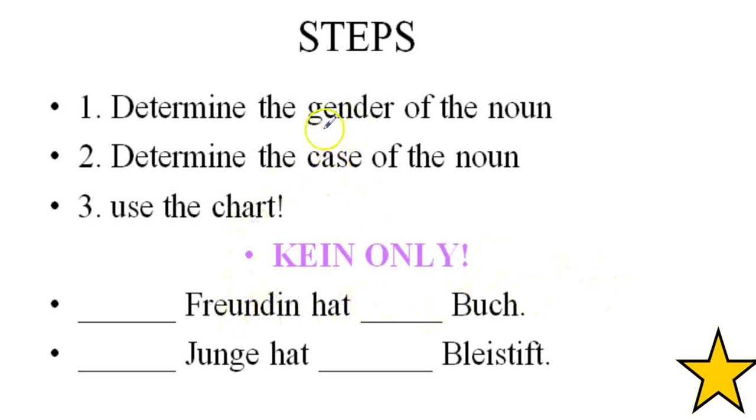So let's first dissect the genders of these words. Freundin, we know that's feminine. Buch is neuter. Junge, masculine. Bleistift, masculine. So now I've determined the gender. Next we want to look at the case. So we're saying no girlfriend has no book. I know this sounds horrible, but we're practicing kein. So no girlfriend, this is the subject, so this is nominative case.